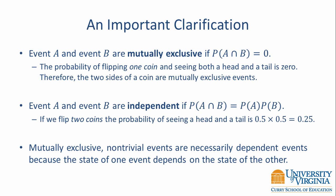By comparison, event A and event B are independent if the probability of A and B is equal to the probability of A times the probability of B. If we flip two coins, the probability of seeing a head and a tail is 0.5 times 0.5, which equals 0.25.